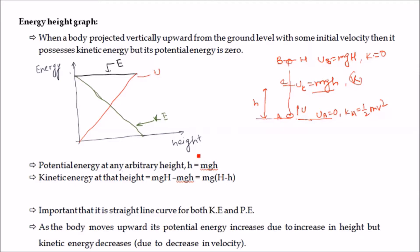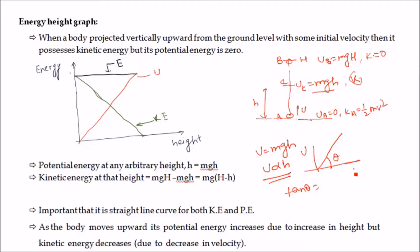Clearly, potential energy at any arbitrary height equals mgh. If we draw the potential energy versus height graph, since U = mgh, U is directly proportional to h, so the U versus h graph will be a straight line making some angle theta. The slope of this line is tan(theta) = mg.